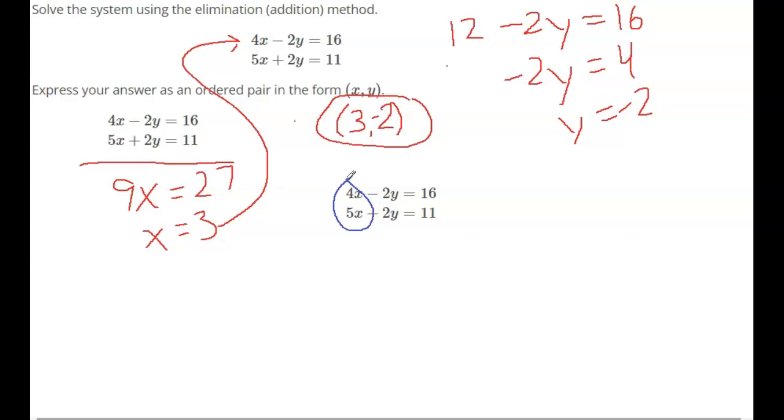I can do that by multiplying the entire equation by a value. So 4 and 5 can both be changed to 20. I'm going to multiply this entire top equation by negative 5. That will give me negative 20x plus 10y equals negative 80.